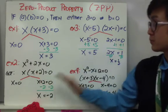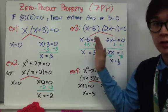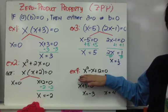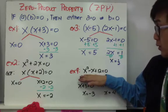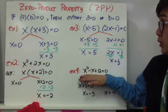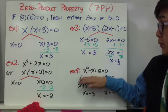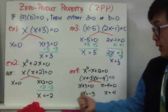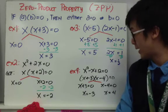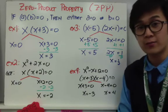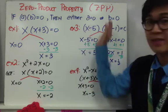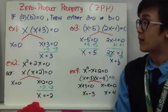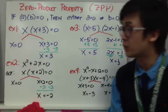Sometimes we don't use the zero product property right away. Given x squared minus x plus 12 equals 0, we first perform factoring to get x plus 3 times x minus 4 equals 0. Splitting into two: x plus 3 equals 0 gives x equals negative 3, and x minus 4 equals 0 gives x equals 4. This is the zero product property used in solving quadratic equations without the quadratic formula or completing the square.